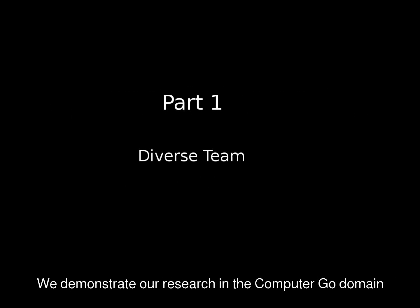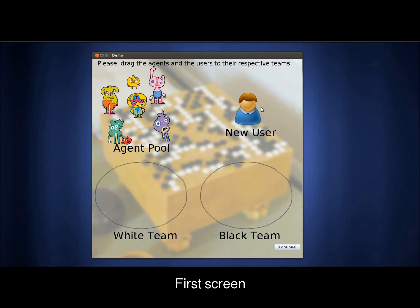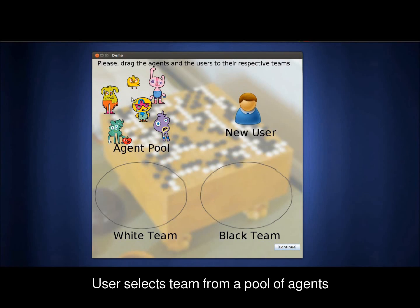This multi-agent team video for the game Go is a three-part demonstration. In the first screen, the user selects which side is commanded by the agents and which side is commanded by the player.